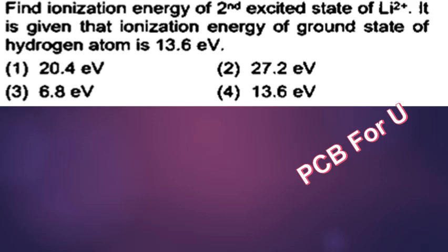Find ionization energy of second excited state of lithium-2 plus. It is given that ionization energy of the ground state of hydrogen atom is 13.6 electron volt.